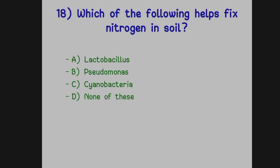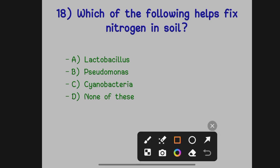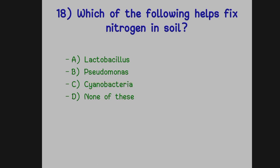Which of the following helps fix nitrogen in soil? Option A: Lactobacillus. Option B: Pseudomonas. Option C: Cyanobacteria. Option D: None of these. The correct answer is Option C, cyanobacteria — it helps fix nitrogen in soil.